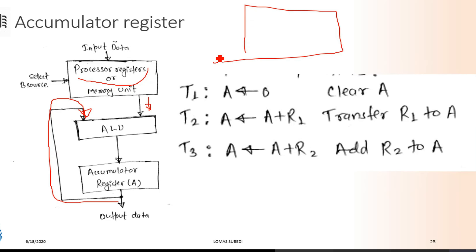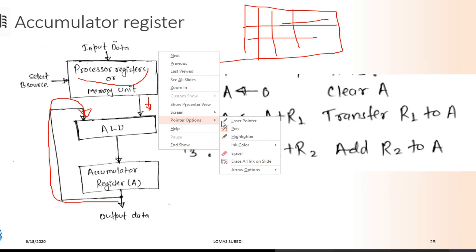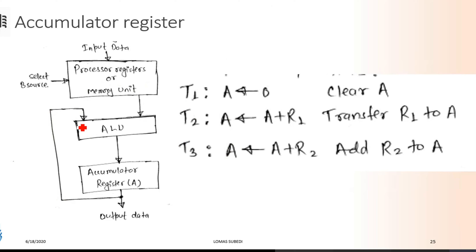In the processor, there is a temporary register. In the temporary register, there is a temporary value you can keep. This is the simple diagram. There is ALU. There is the source accumulator register. There is the result of the accumulator. There is a processor register and memory unit, and there is another variable and processor register.